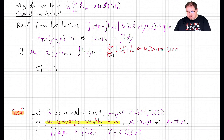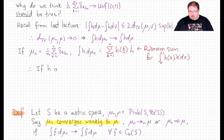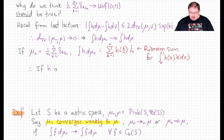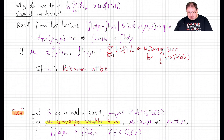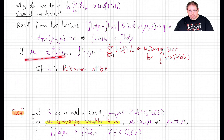It is in fact a Riemann sum for the Lebesgue integral of h on the unit interval, which is the integral against the uniform measure. If our test function h is Riemann integrable, then this desired convergence holds with the discrete approximating measure.